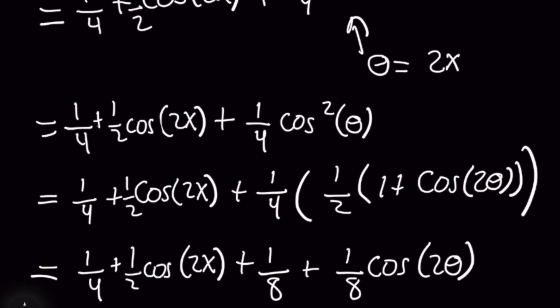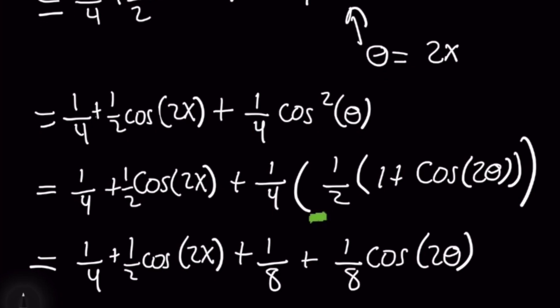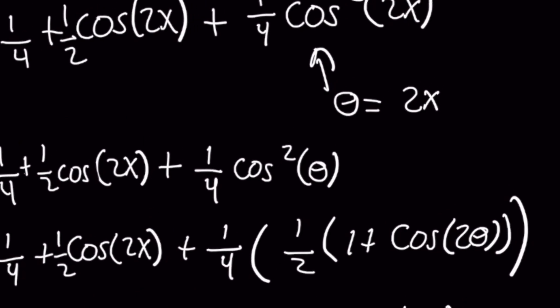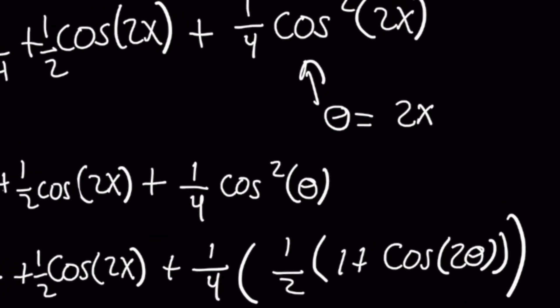Because cosine squared of something is the same as one-half times one plus cosine of two times that something, right? And the beauty of this is that in this video, that means we only needed to memorize one identity formula instead of having to use several different other ones.